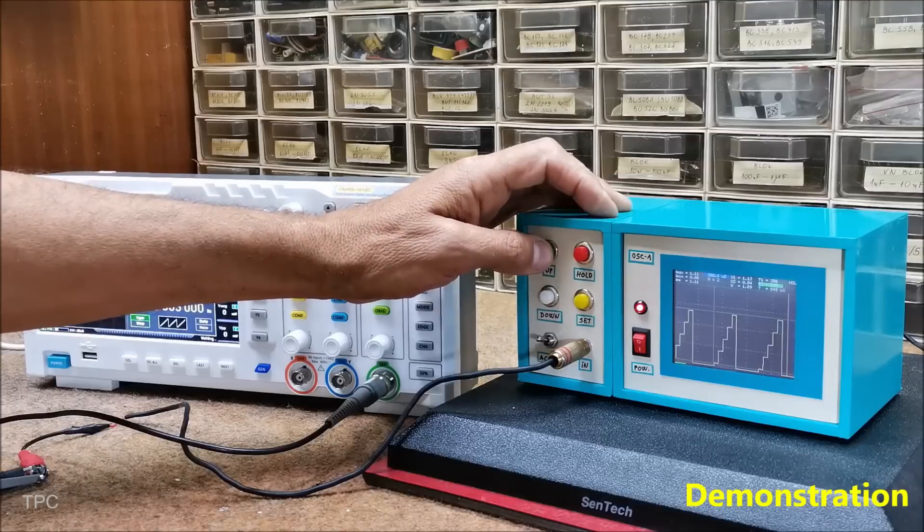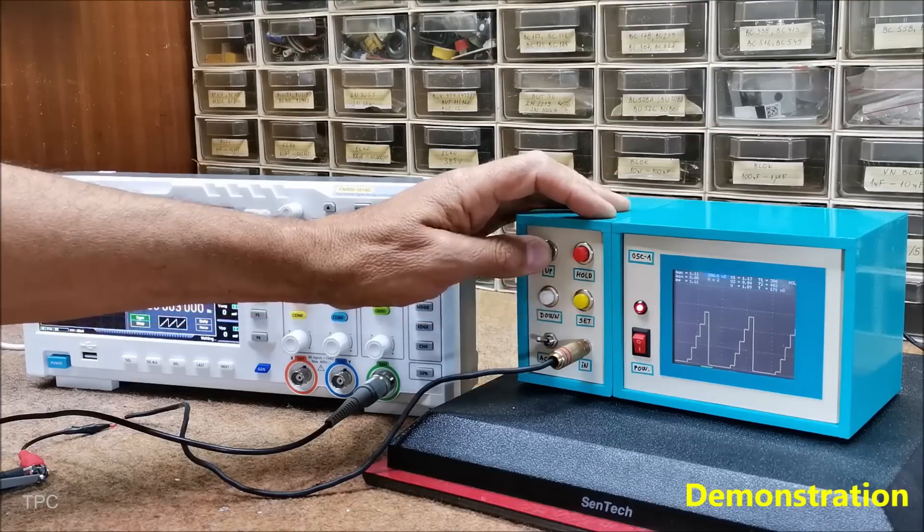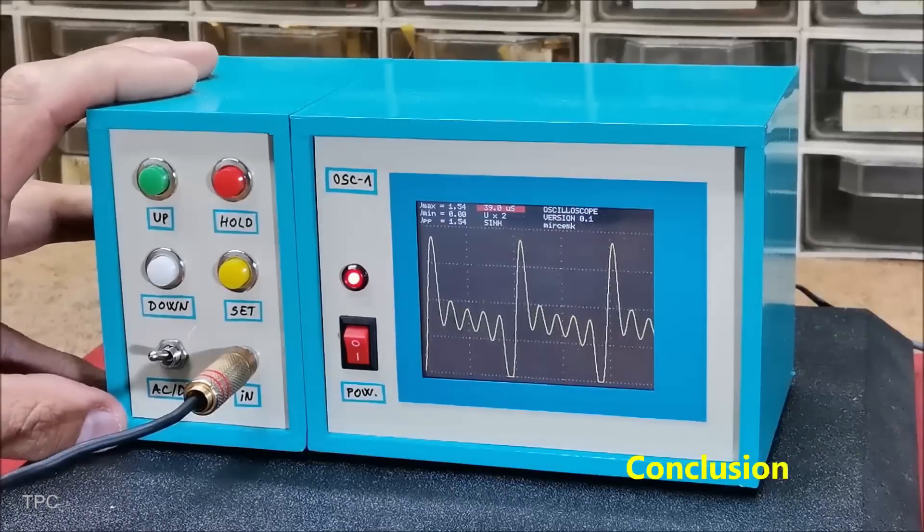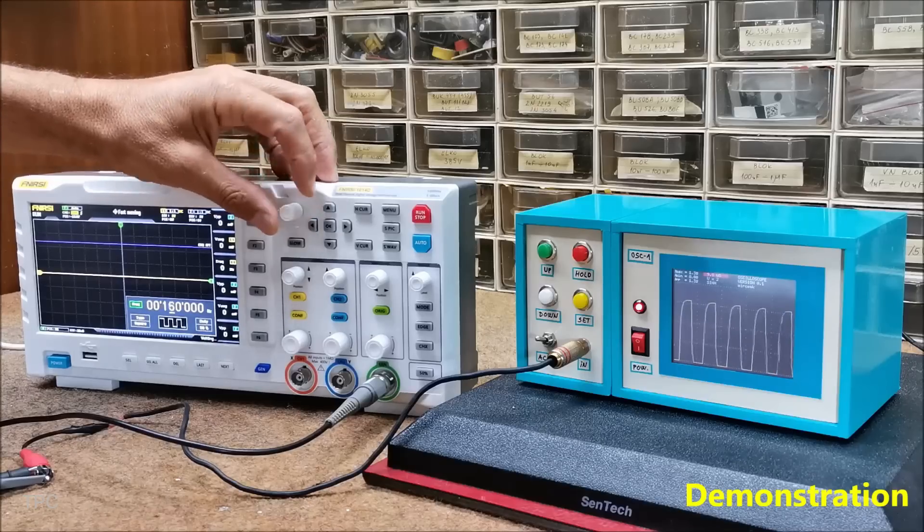This device costs around $15 to build with easily available devices. Whether you're testing waveforms or learning electronics, this homemade oscilloscope proves you don't need expensive tools to explore signal analysis. What would you use this DIY oscilloscope for?